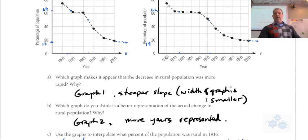So let's go over this. We talked about A and B. Graph one appears that the decrease is quite a bit more rapid because it's steeper, it's squished up a little bit. The width of the graph is smaller. Maybe an actual better representation of the actual change is probably graph two, because there's more years that are represented, there's more data points, and that's the big thing. There are more data points, which you should make sure you have that. More years represented, more data points. The more data points you have, the more accurate you'll be, because we've skipped a lot of data points here in graph one.